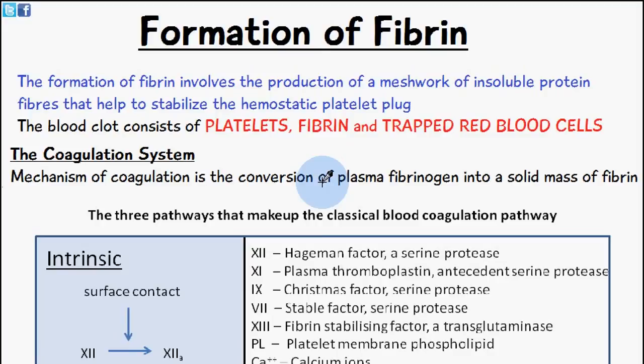But that platelet plug which forms is only a temporary solution. We have the formation of fibrin next, which helps to stabilize and make this plug a lot more stable. The blood clot itself, once fully formed, consists of platelets, fibrin, and trapped red blood cells.